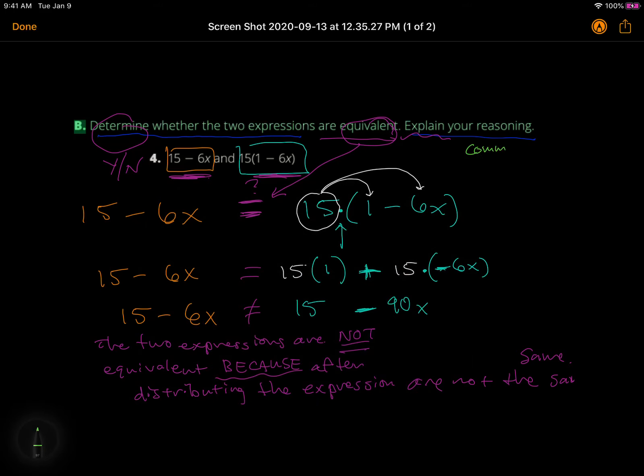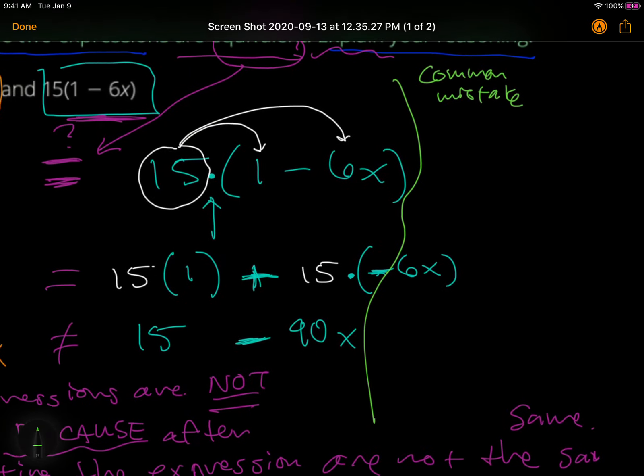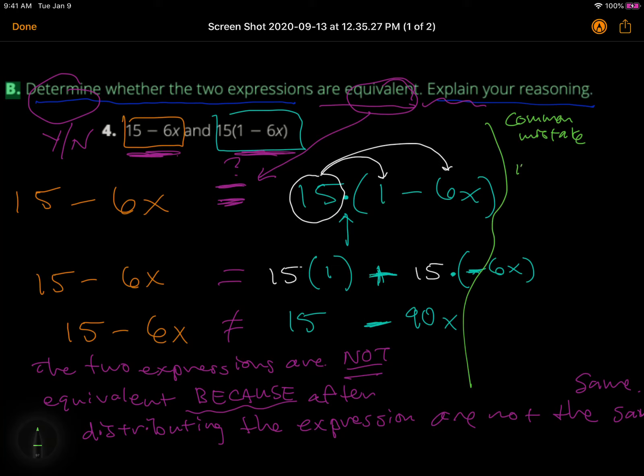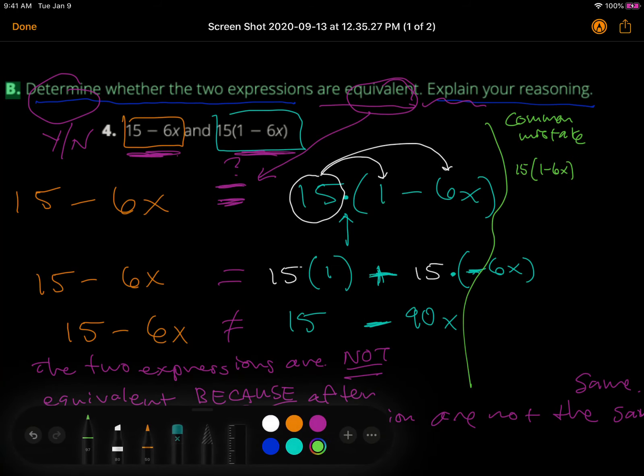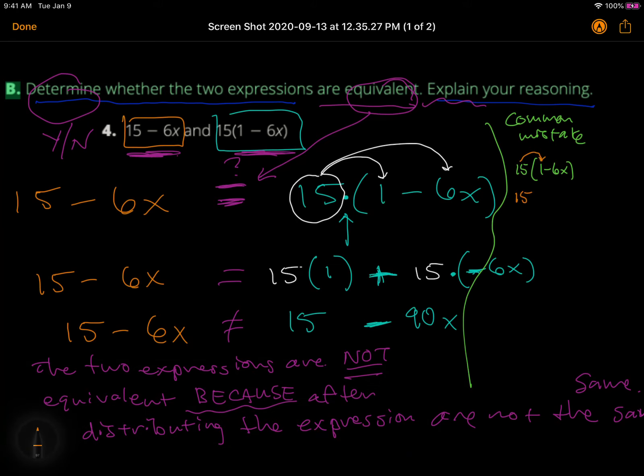Common mistake. And in this term, I'm going to say 15 times 1 minus 6x. And the thing that students get wrong here is they like to distribute only to that first term. So they would have gone 15 minus 6x. Again, this is wrong. Common mistake.